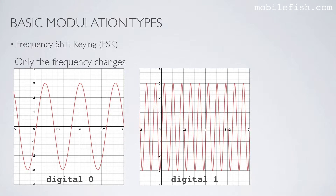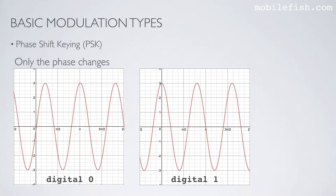When we use frequency shift keying, only the frequency changes. The signal here has a higher frequency than the signal here. This particular signal represents a digital 1 and this particular signal represents a digital 0. When we use phase shift keying, only the phase changes. The phase of this signal is different than the phase of this signal. When the signal has this phase it represents digital 1, and when the signal has this phase it represents digital 0.